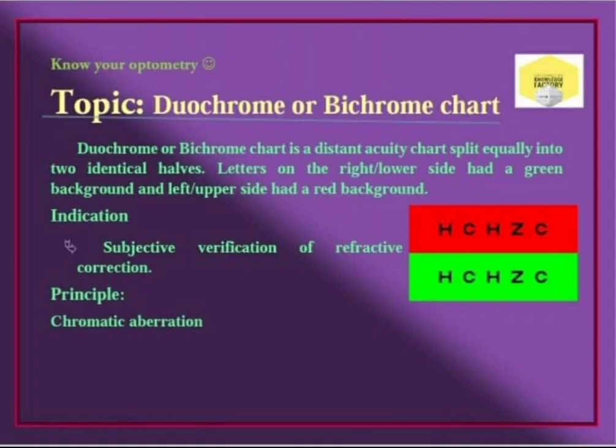Diochrome or Bichrome chart — what is the name of this? Dio or Bi means Two, Chrome means Color. Letters appear in different color backgrounds. This chart is basically used to test distance in the direction.